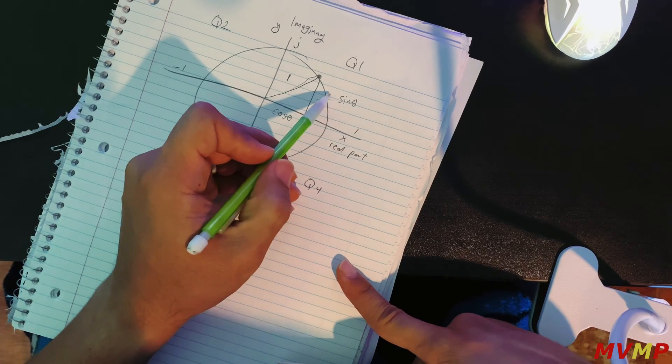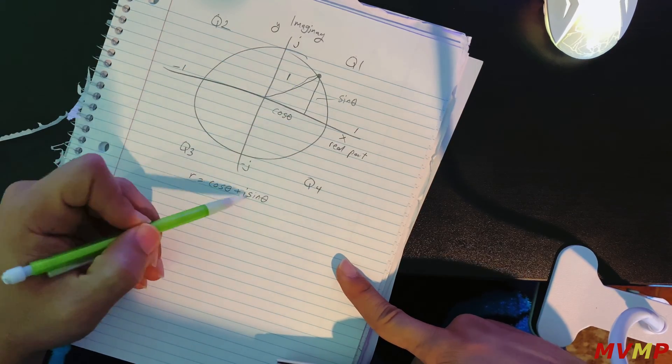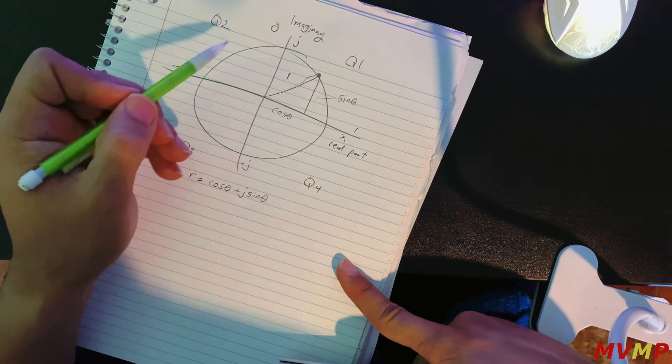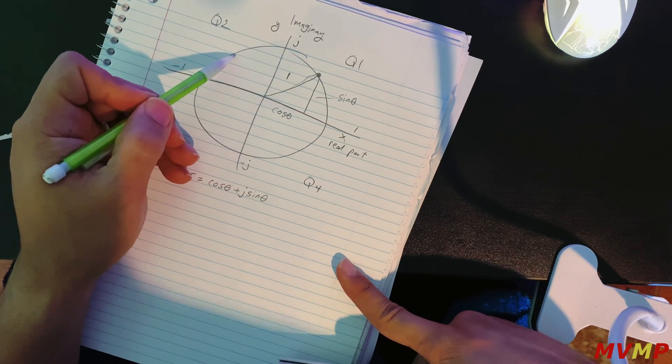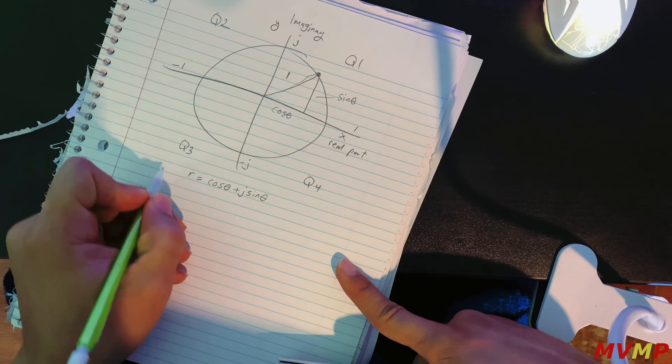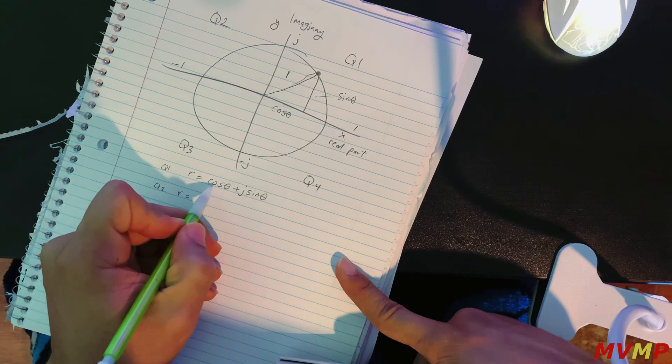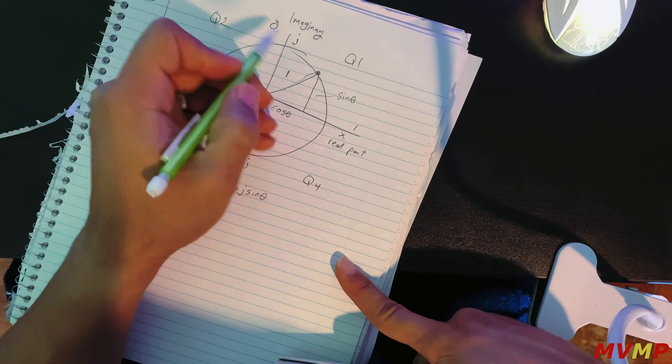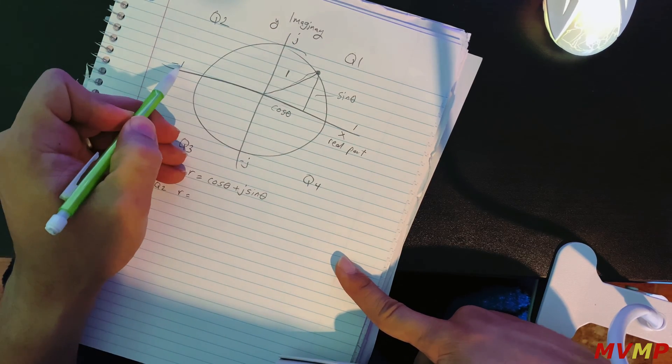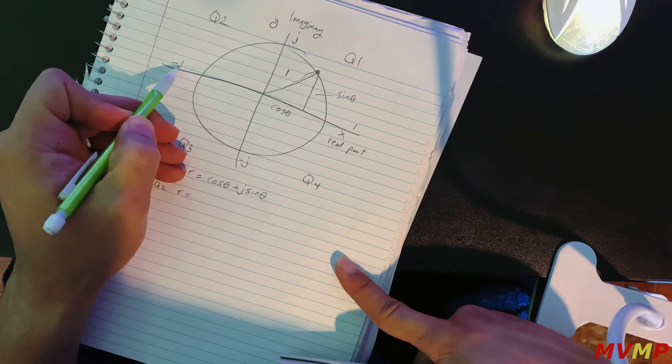As you'll know, in quadrant one both the real and the imaginary is positive. Once you move over to quadrant two, the real part as you can see here, imaginary is positive, negative and the real is negative.